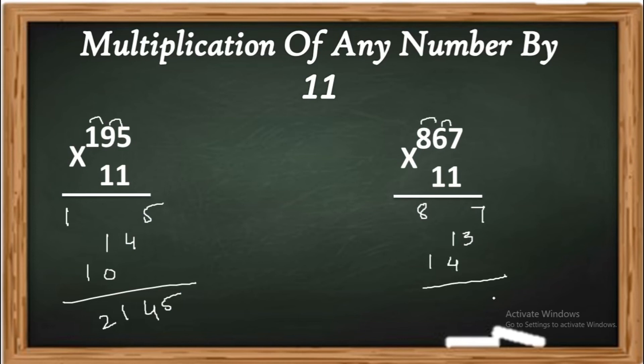And add them all. 7 as it is 7, 3 as it is 3, 1 plus 4 is 5, and 8 plus 1 is 9. And the final answer is 9537.